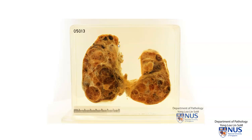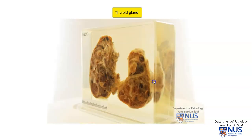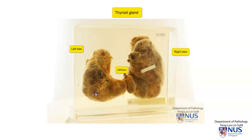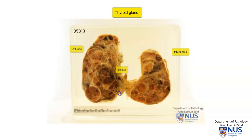This is a gross specimen of a thyroid gland, and this has been sectioned coronally so that we're looking at the cut surface. When we look posteriorly, this is the left lobe, the isthmus, and the right lobe, and it has a lobulated outline.